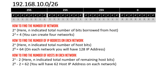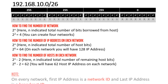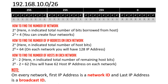Why do we subtract 2? Because on every network the first IP address is reserved for the network ID and the last IP address is reserved for the broadcast ID — these two cannot be used.